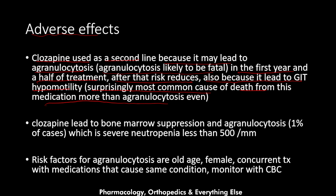Because of these two adverse effects, clozapine is used as second-line. Clozapine leads to bone marrow suppression and agranulocytosis in 1% of cases, defined as severe neutropenia with less than 500 cells per milliliter. Risk factors include elderly age, female gender, and concurrent use of medications that cause the same condition. When treating a patient with clozapine, the complete blood count (CBC) must be monitored for agranulocytosis.